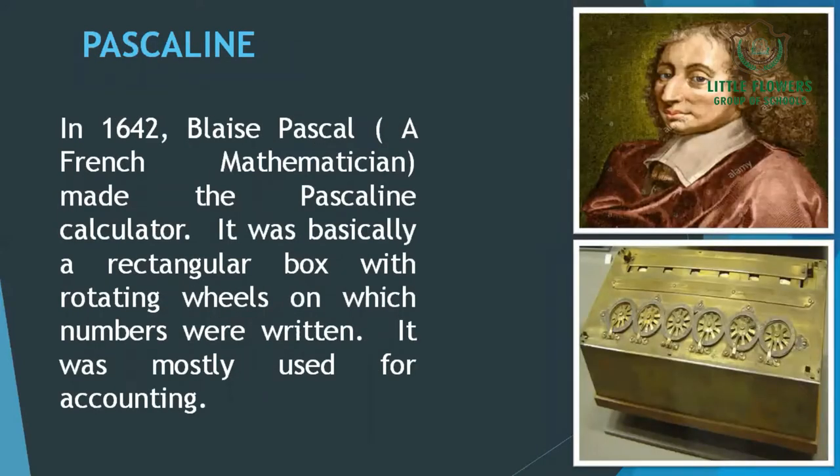The next device is the Pascaline Calculator. In 1642, Blaise Pascal, a French mathematician, made the Pascaline Calculator. It was basically a rectangular box with rotating wheels on which numbers were written. It was mostly used for accounting. The first Pascaline Calculator could perform calculations only up to five-digit numbers, but later versions could perform calculations for six and eight-digit numbers as well.